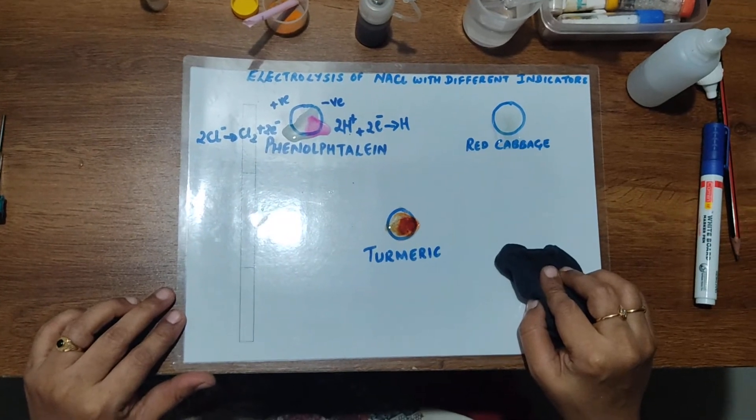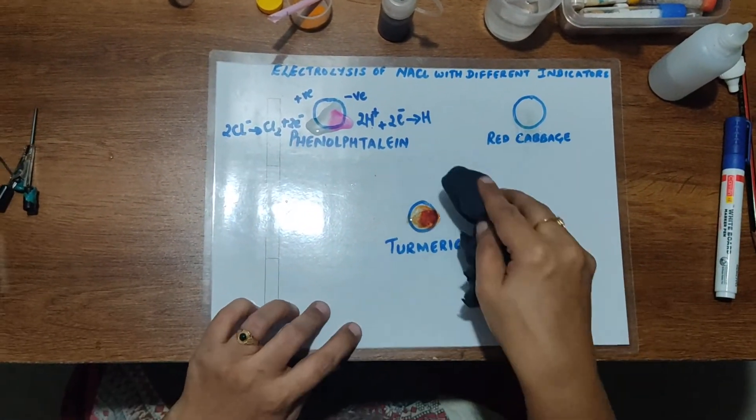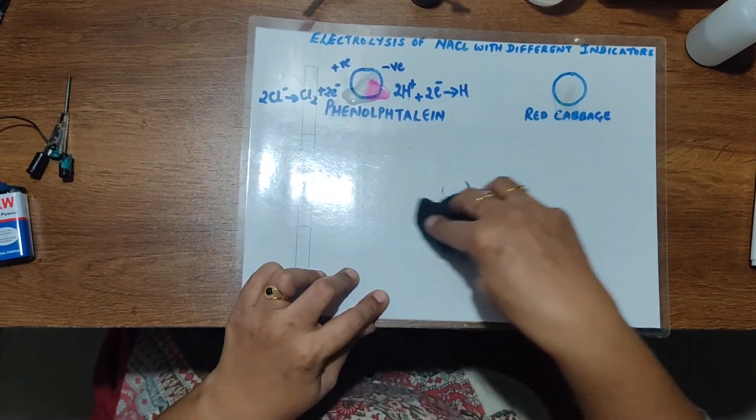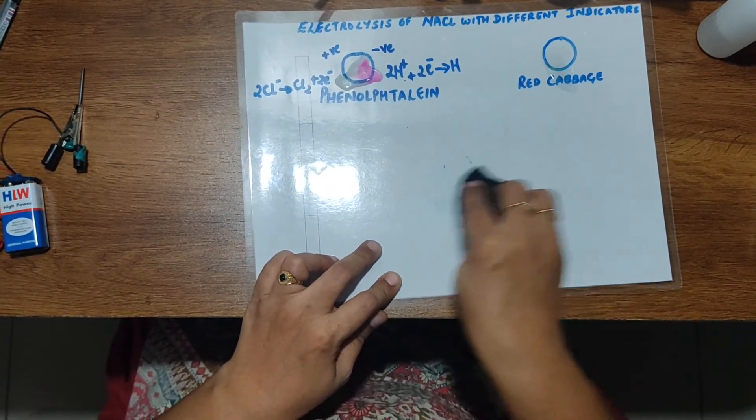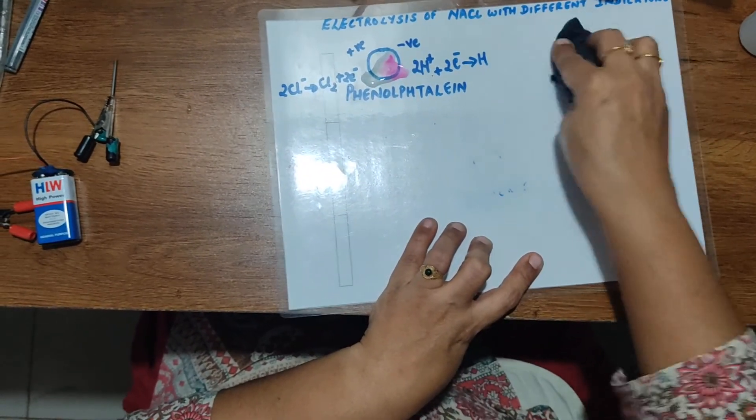Now that you have seen the simple electrolysis reaction, you can clean this laminated sheet just using a piece of cloth, and then the laminated sheet would be ready for the next experiment.